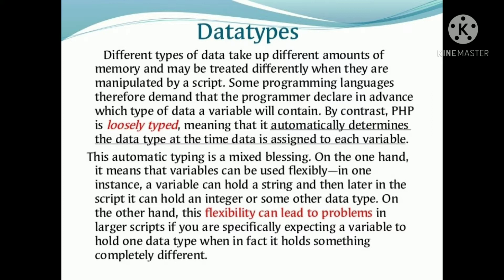We can assign a string to a variable, but we need to assign the correct integer or other data types. In a memory location, we can store different types of data. This flexibility is a blessing. But in some cases, this flexibility in programming can be a problem. In loosely typed languages, when you assign a value, the compiler automatically updates the corresponding data type.